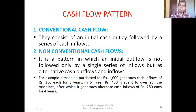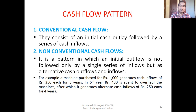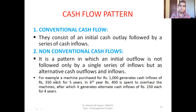For example, a machine purchased for 1000 rupees — these are simple examples given so that you can understand; you don't get a 100,000 rupee machine generating 350 for one year in reality. For example, a machine purchased for 1000 rupees generates cash inflows of 350 rupees each year for five years.